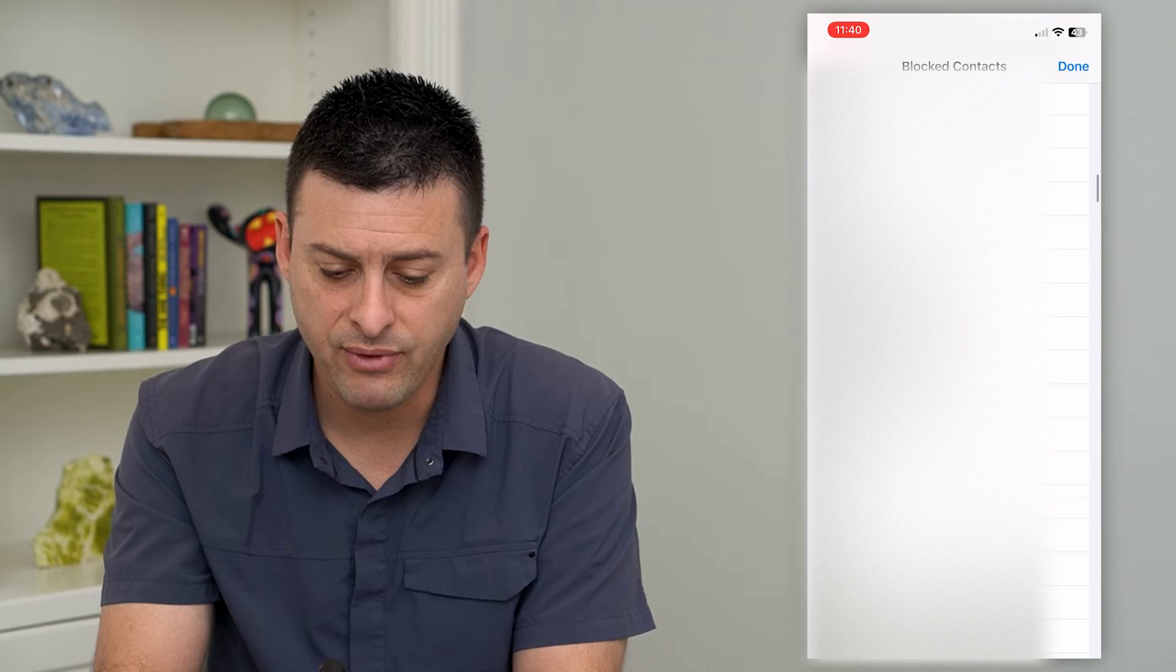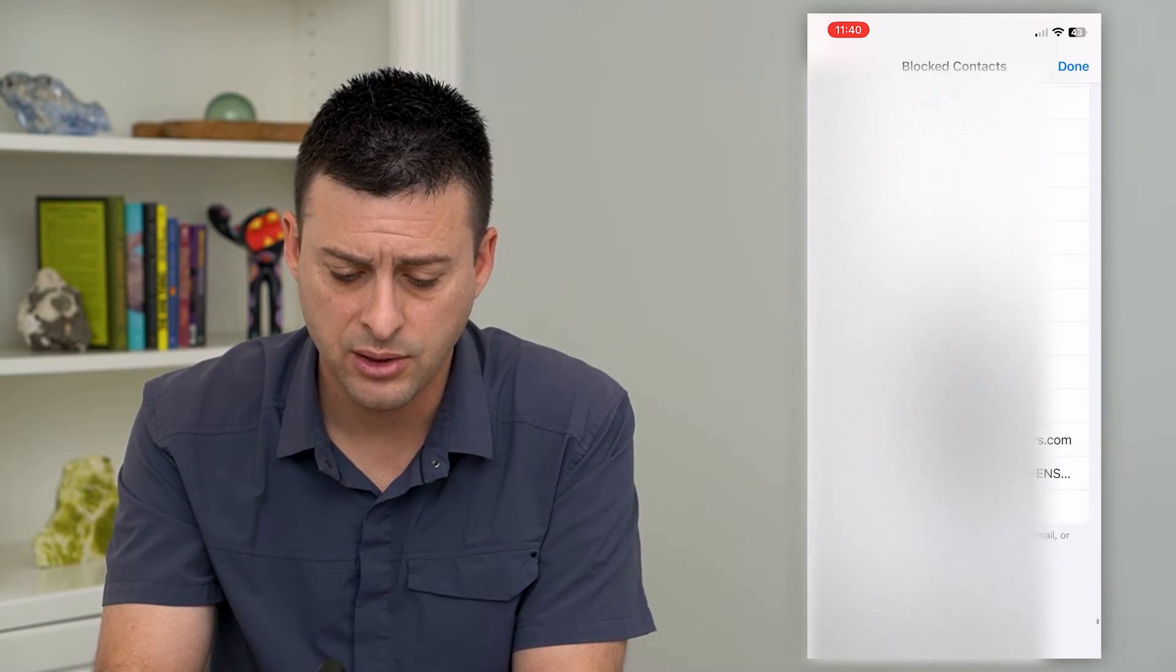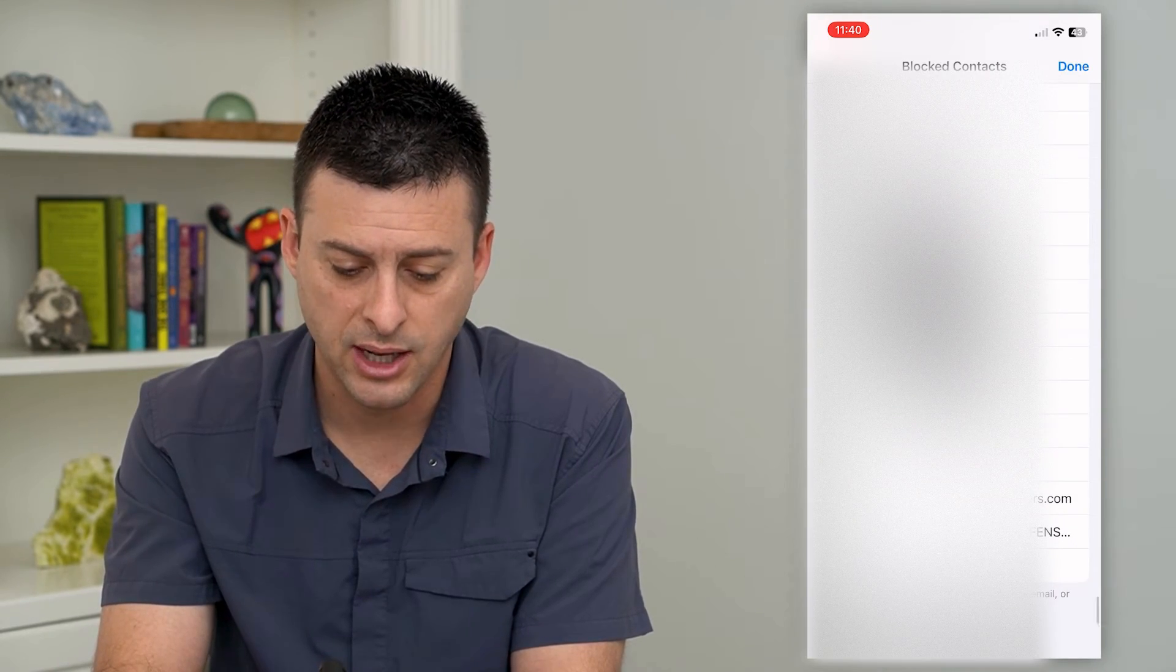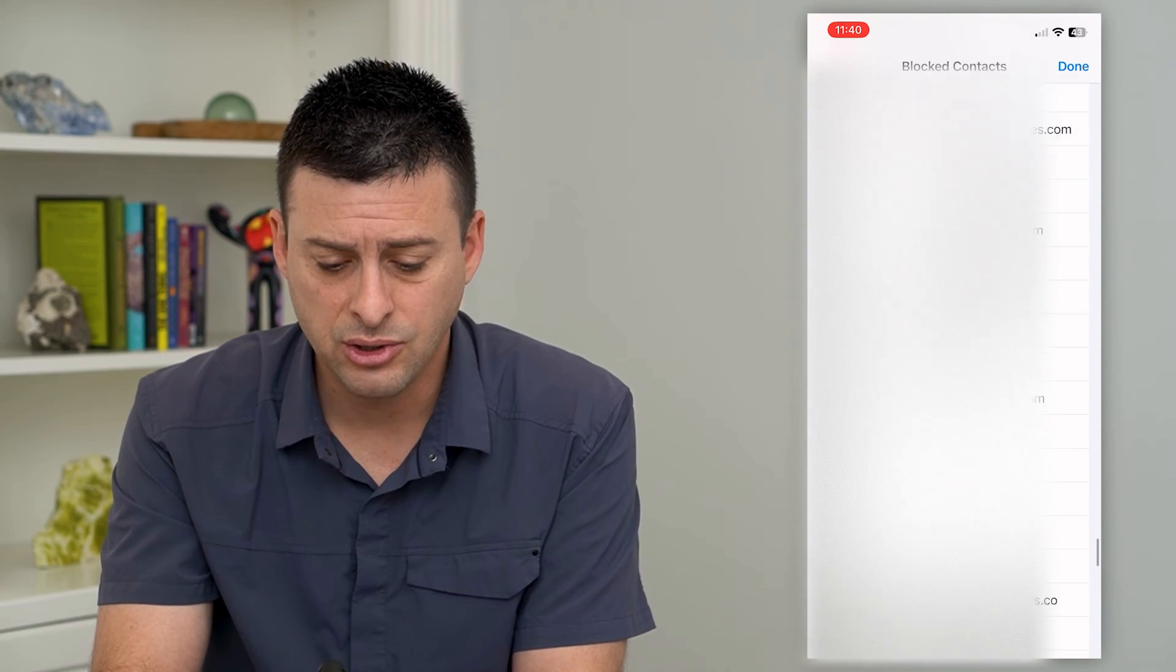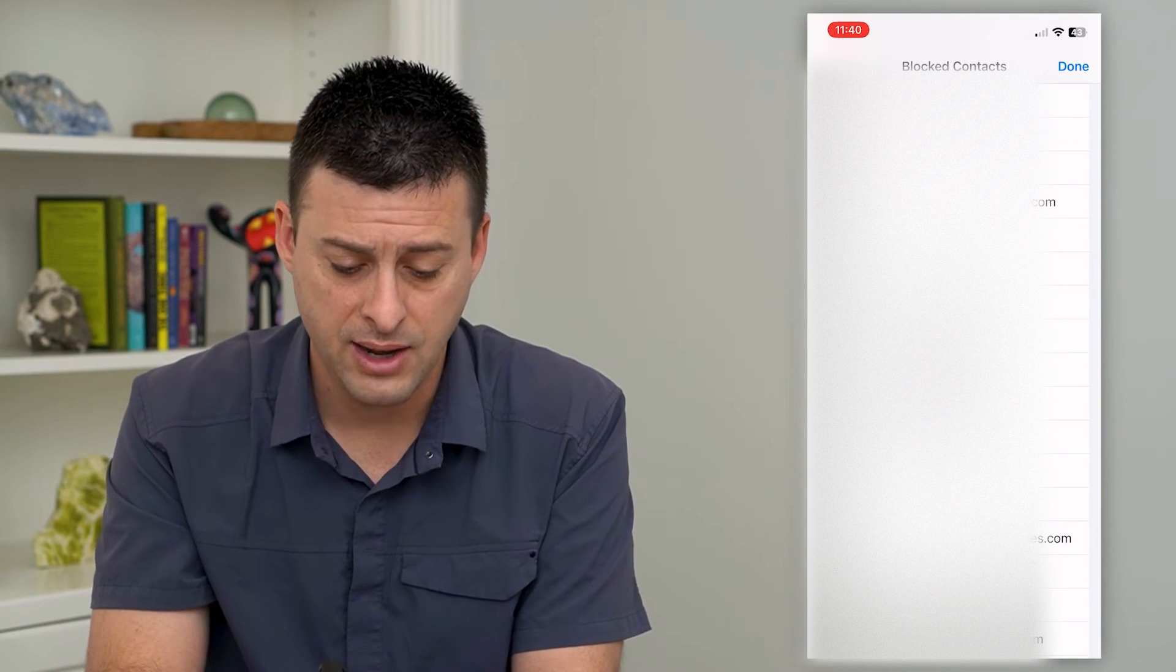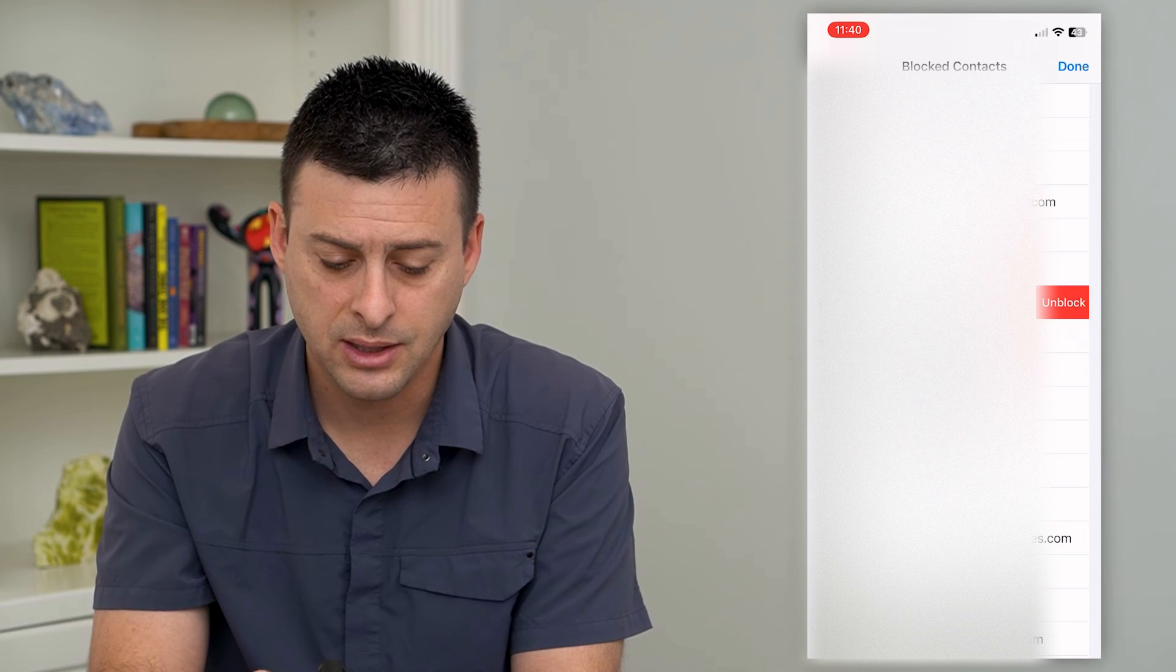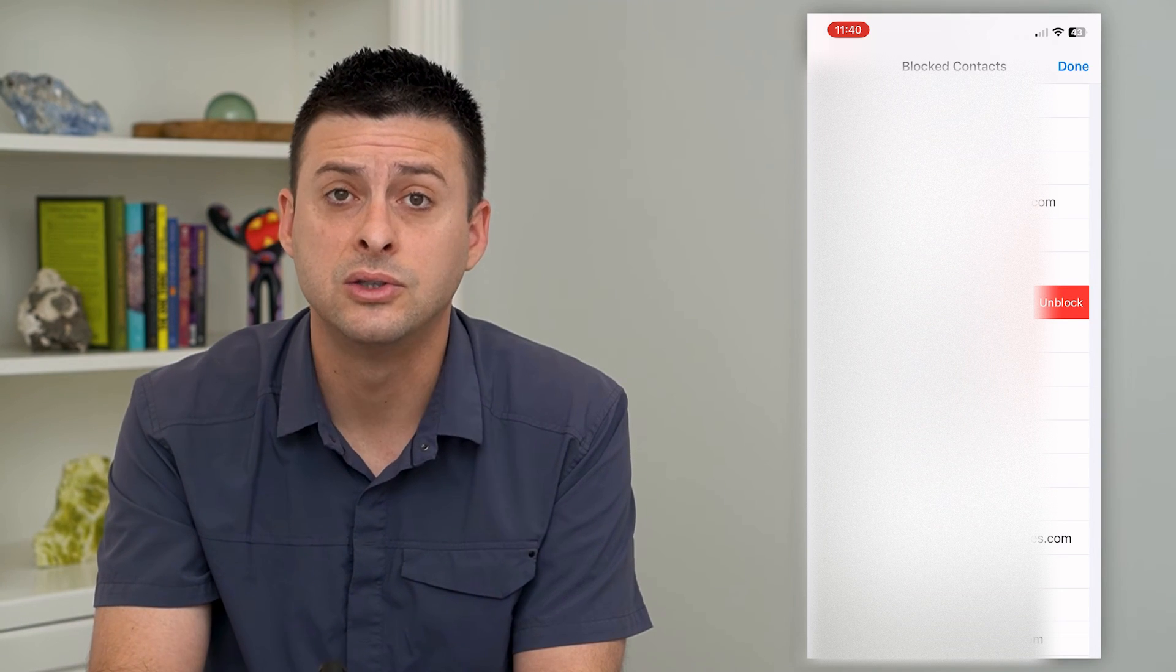So you can see I have a lot of numbers, so it'll take a while. It also has phone numbers as well as email addresses on here. There's no way to just select all. You'll have to go one by one, hit the minus, and then hit Unblock here through that list.